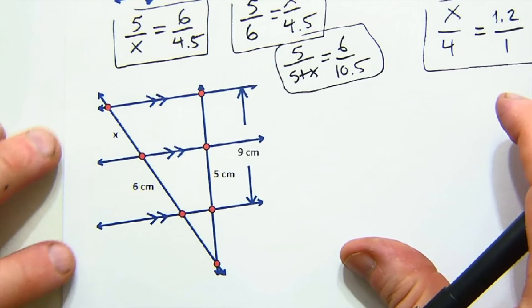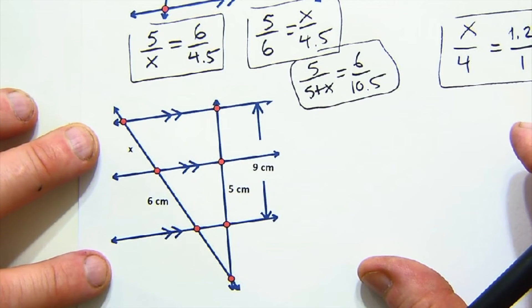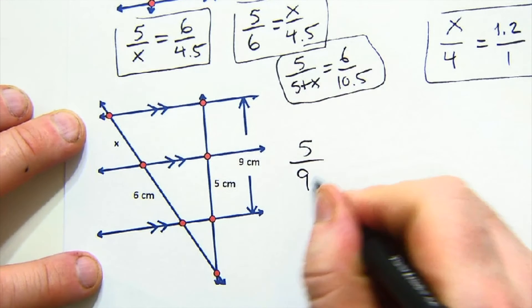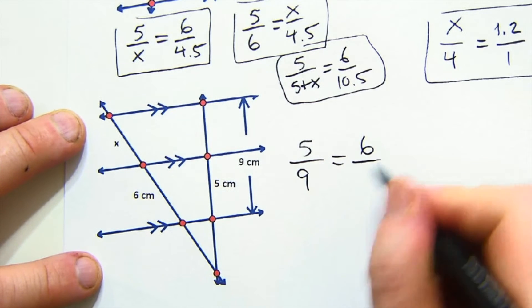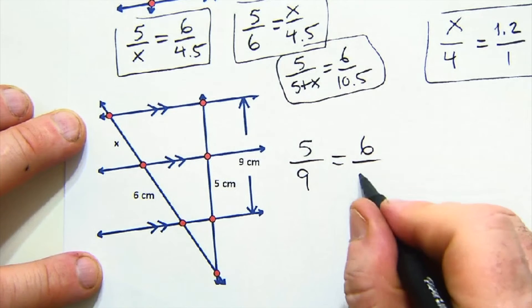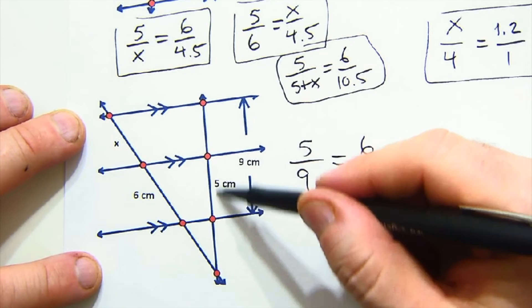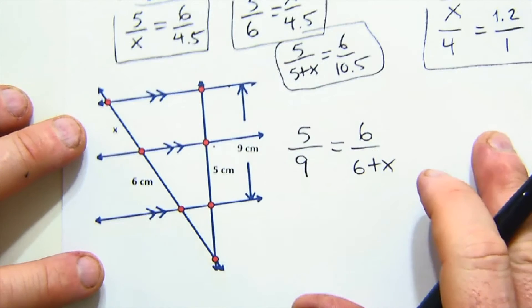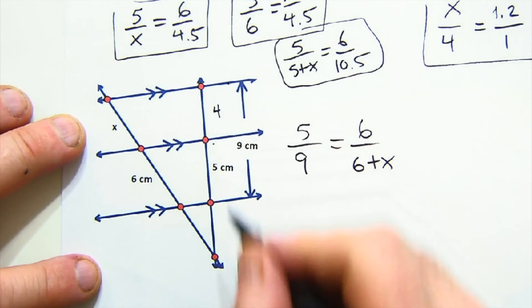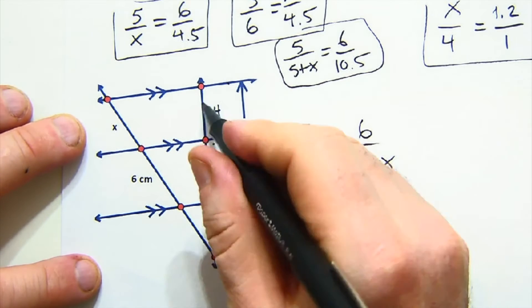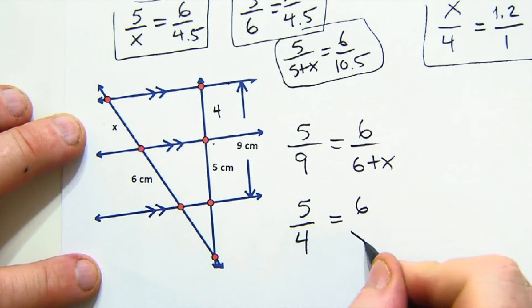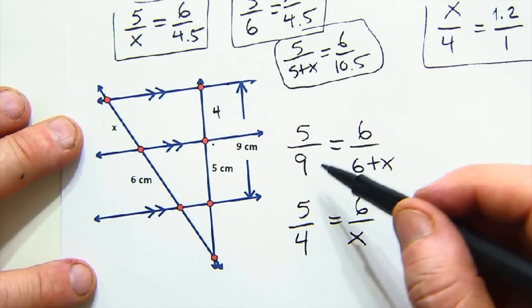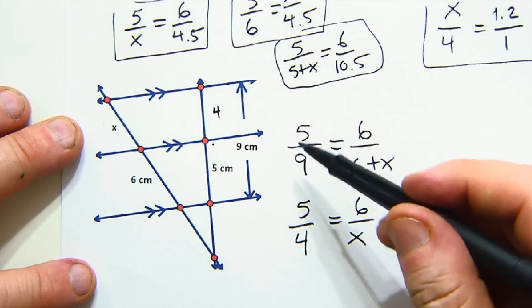Now you got some options here as well. Let's start with 5 is to 9. You see it, 5 is to 9 as 6 is to 6+X. Did you see why I did 6+X? Watch, 5 is to the total 9, 6 is to the total 6+X. If you didn't like that, you could break down this to be a 4 because that's how much it has to be, and you could go 5 is to 4 as 6 is to X. This is just like the boys and the girls problems where we were sometimes talking about boys to girls and sometimes boys to totals.